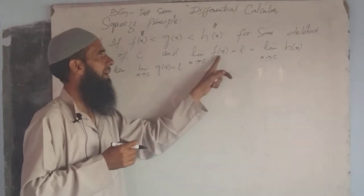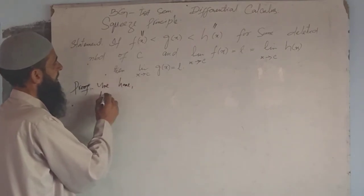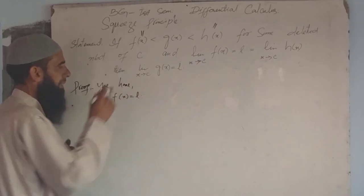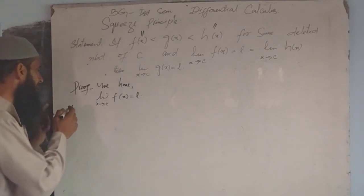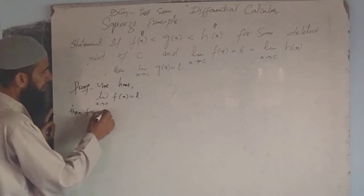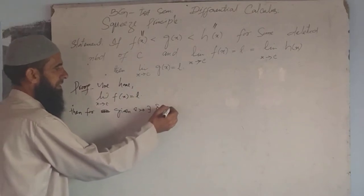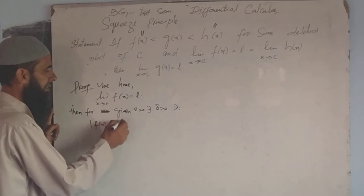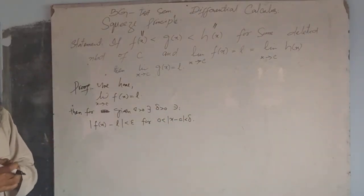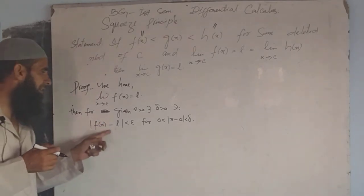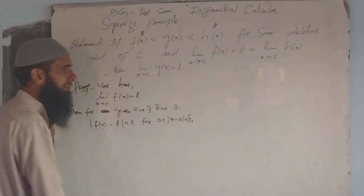To prove this result, we have: limit of f(x) as x approaches c equals L. By the epsilon-delta definition of the limit of a function, for any given epsilon > 0, there exists delta₁ > 0 such that |f(x) − L| < epsilon for 0 < |x − c| < delta₁. This is the epsilon-delta definition of limit of a function at a point. Since we have two functions, we use delta₁ here.